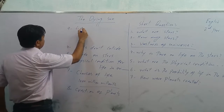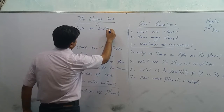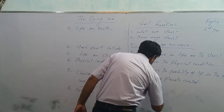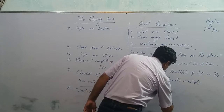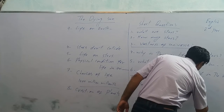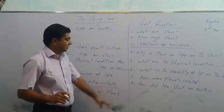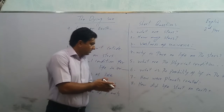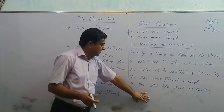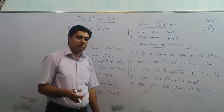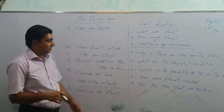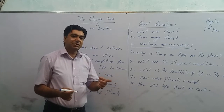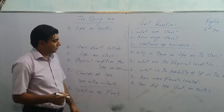Life on Earth. How did life start on Earth? How did life begin on Earth? Sir James Jeans says that it started in the form of micro-organisms. Initially life was very simple, and with the passage of time it kept on becoming more complicated, finally creating complex individuals like human beings.